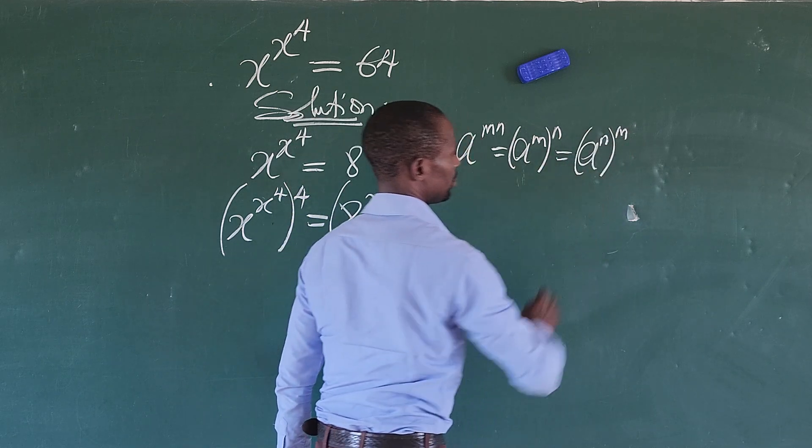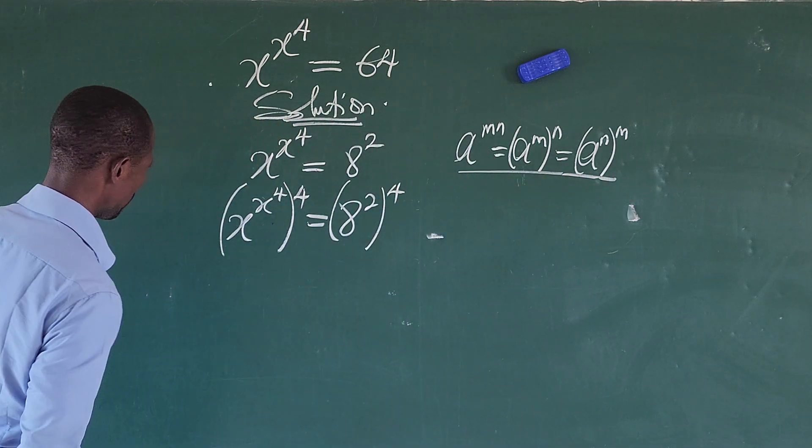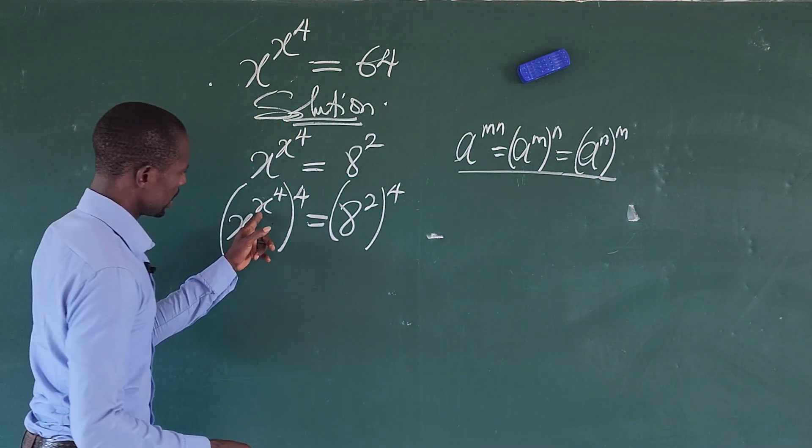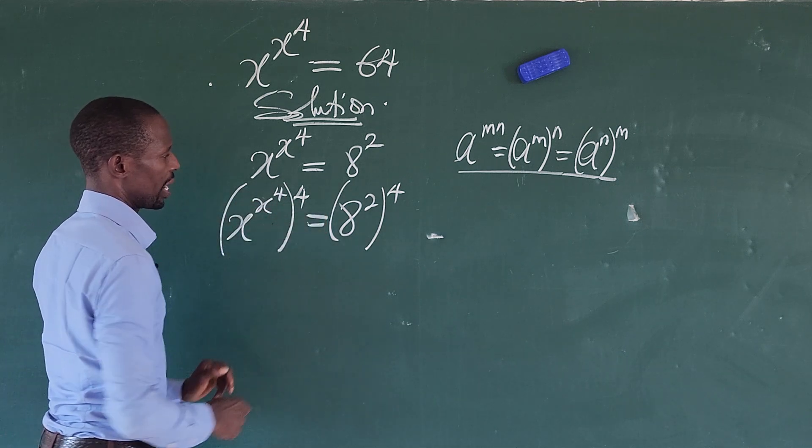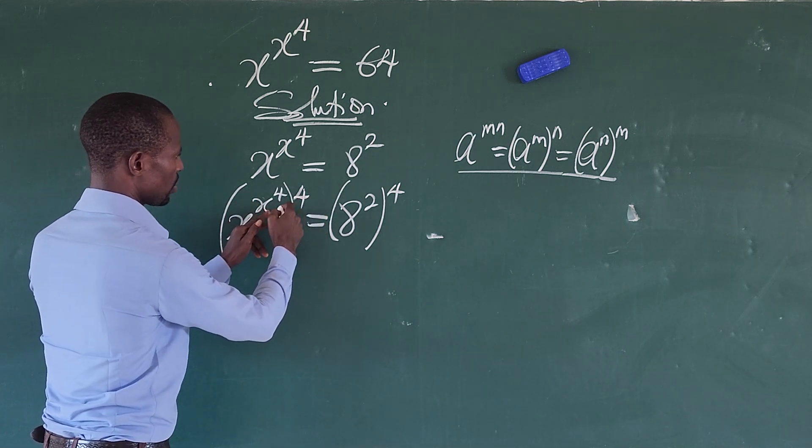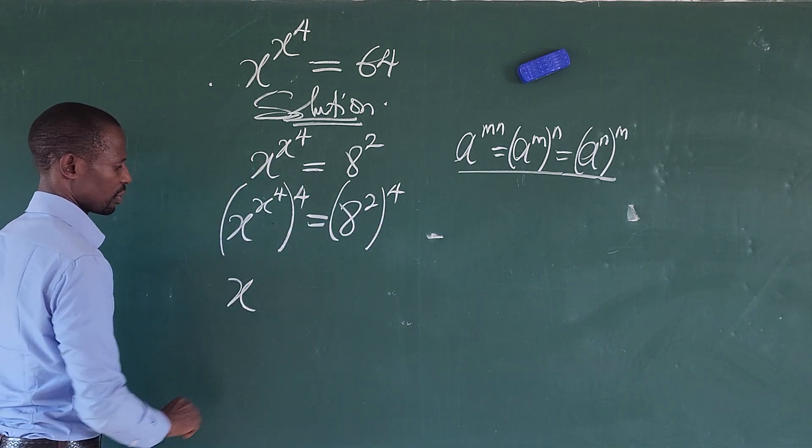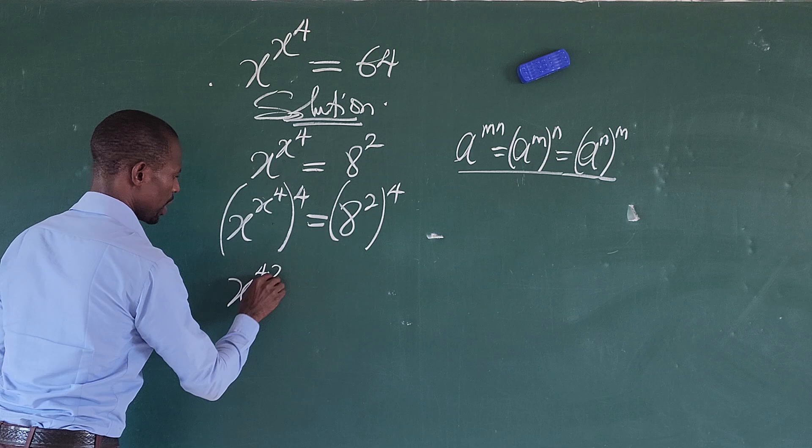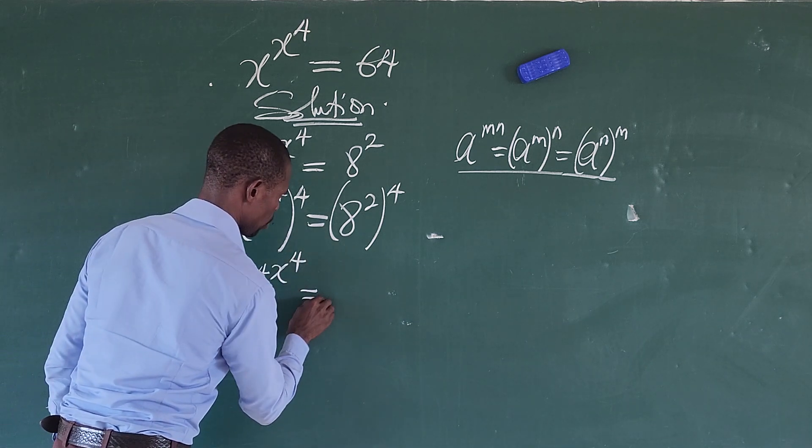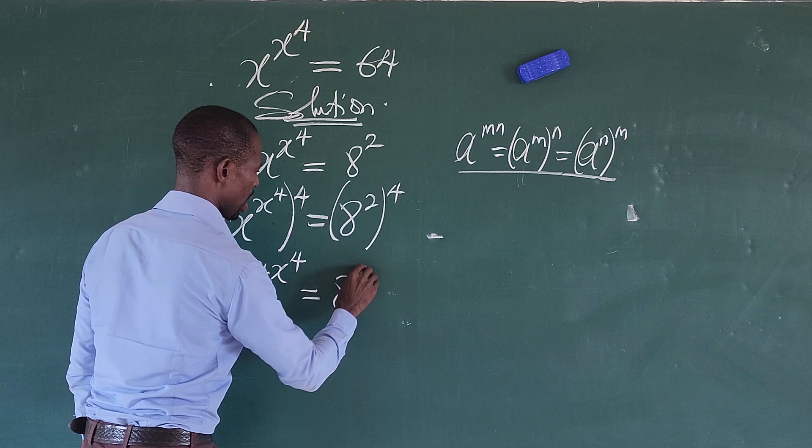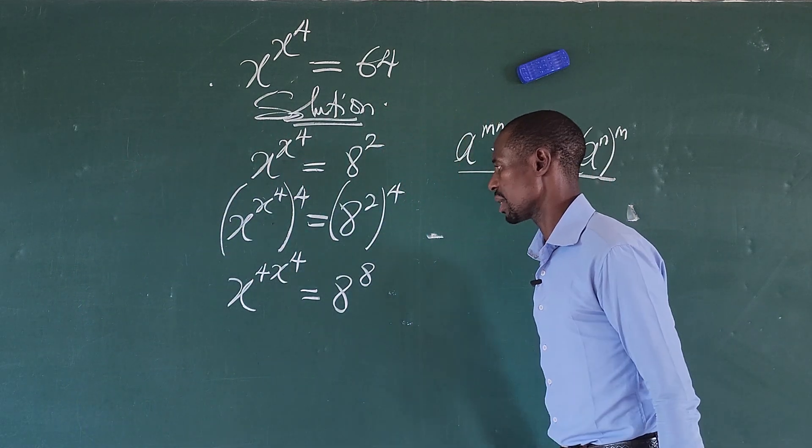So, that's equal to 8 to the power of 8 because 2 times 4 will give us 8 here.